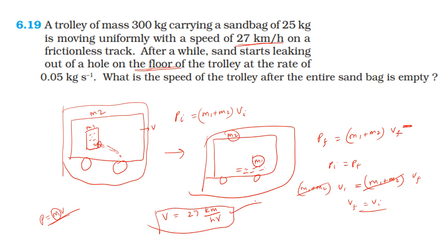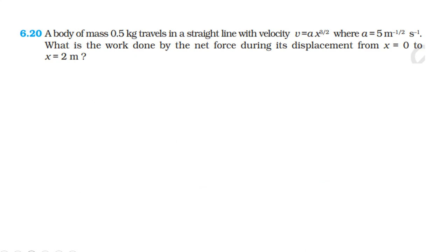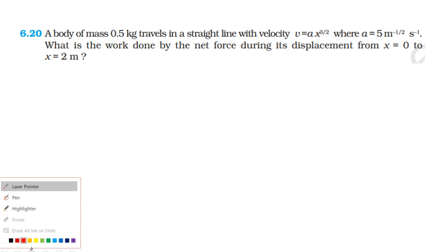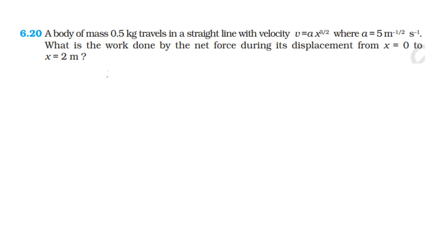Next question: a body of mass 0.85 kg travels in a straight line with velocity v = a·x^(3/2), where a = 5 m^(−1/2)·s⁻¹. What is the work done by the net force during its displacement from x = 0 to x = 2 meters? According to the work-energy theorem, the work done by the net force equals the change in kinetic energy.